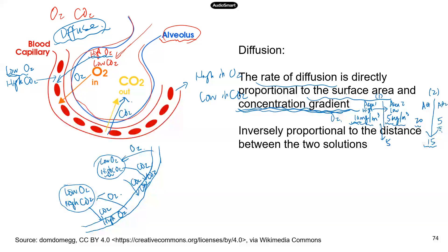The rate of diffusion is also inversely proportional to the distance between the two solutions or areas. Diffusion happens in liquid, in air, even in solid, so don't worry about what type of medium this is — focus on the distance. The further the two areas are, the longer it takes for molecules to migrate, which slows down diffusion. So you're going to have a slower diffusion of molecules. Just want to mention the factors affecting diffusion in case you see any questions on that.